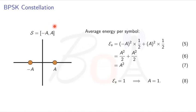We can compute the average energy per symbol as minus A square multiplied with 1 by 2 plus A square multiplied with 1 by 2. After computing this, we will get average energy per symbol as A square.